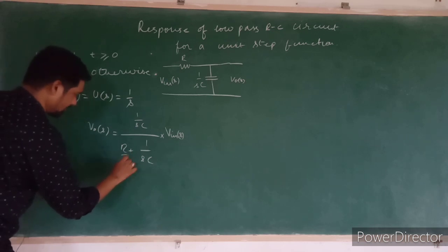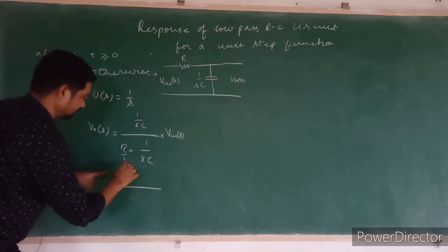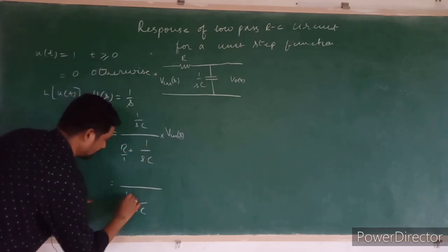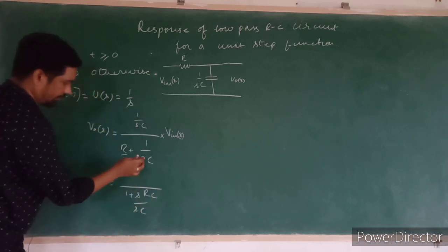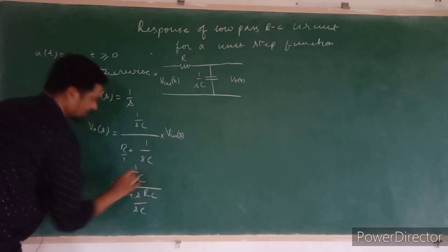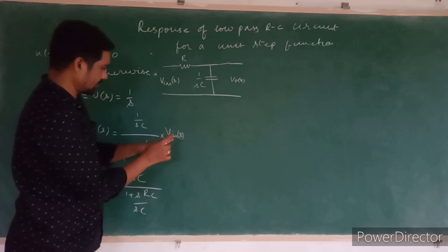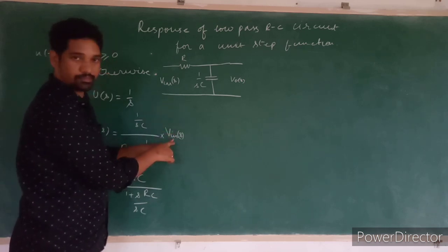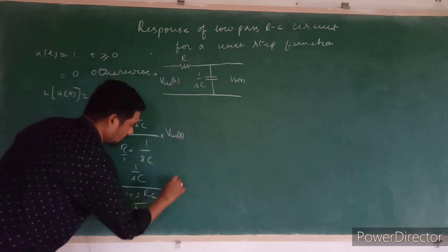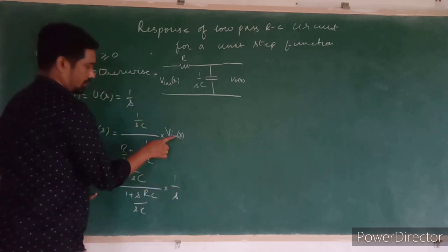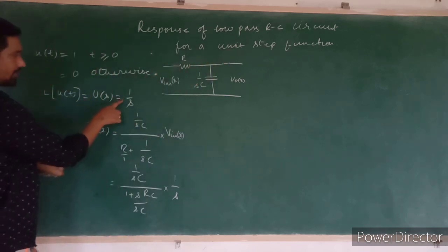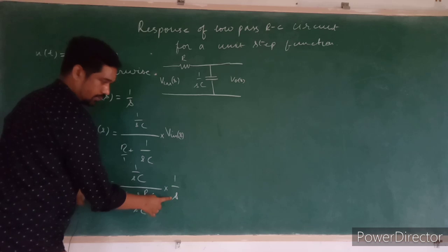Simplifying this, taking sC as common and cross-multiplying, we have 1 plus sRC in the denominator and 1 upon sC in the numerator. Remember that we are dealing with step input, so V_in can be substituted with 1 upon s, because the Laplace transform of the unit step function is 1 upon s.